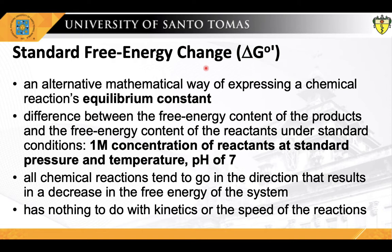The standard free energy change, represented by the notation delta G not prime, is an alternative mathematical way of expressing a chemical reaction's equilibrium constant. It is the difference between the free energy content of the products and the free energy content of the reactants under standard conditions — specifically at one molar concentration of reactants, at standard pressure and temperature, and at a pH of 7. This quantity also governs that all chemical reactions tend to go in the direction that results in a decrease in the free energy of the system. Standard free energy change shows where the final equilibrium for a reaction lies, but tells us nothing about how fast equilibrium will be achieved. The rates of reactions are governed by the parameters of kinetics.